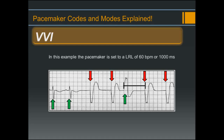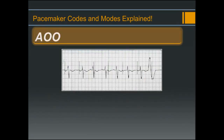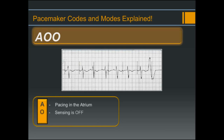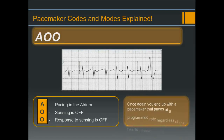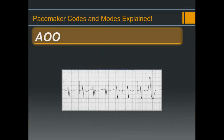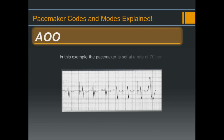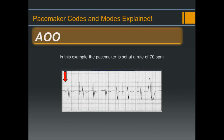It's easy to see that VVI mode is more capable than VOO — we are only pacing the heart when there's an absence of intrinsic activity: pace when you need to, but not when you don't. AOO mode: pacing in the atrium, sensing is off, and a response to sensing is off. The pacemaker paces at the programmed rate regardless of the heart's intrinsic activity. In this example at 70 beats per minute, if atrial sensing were turned on, the pacemaker would have seen the atrial beats marked by the green arrows.